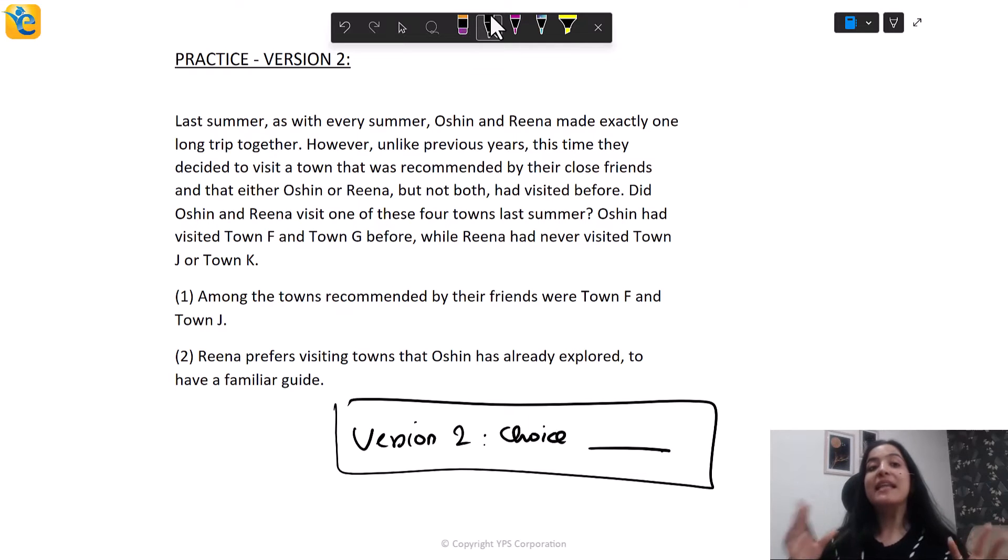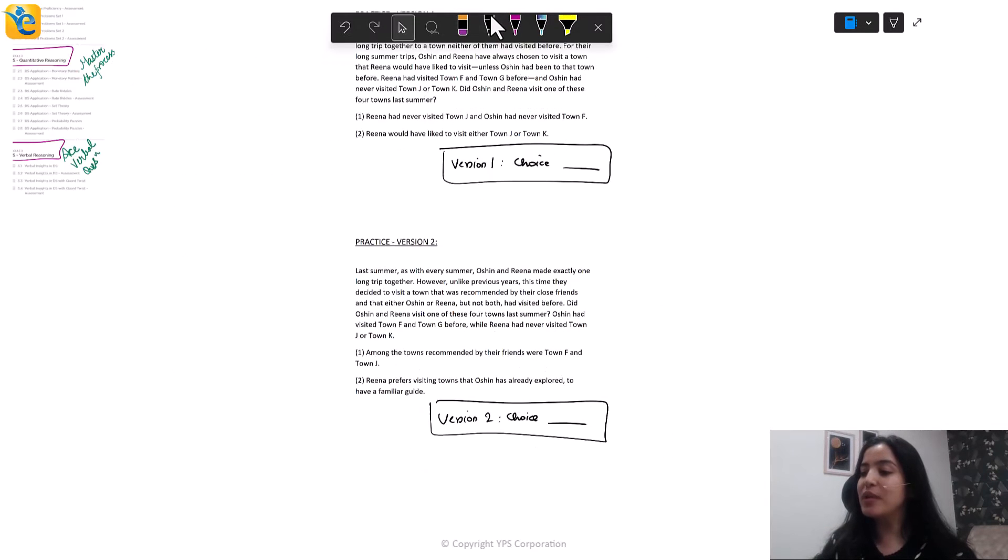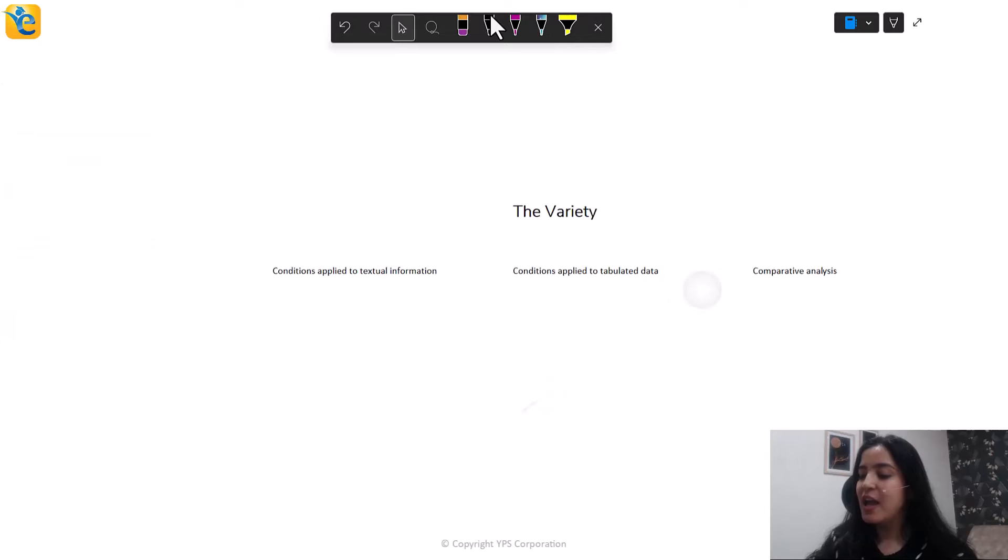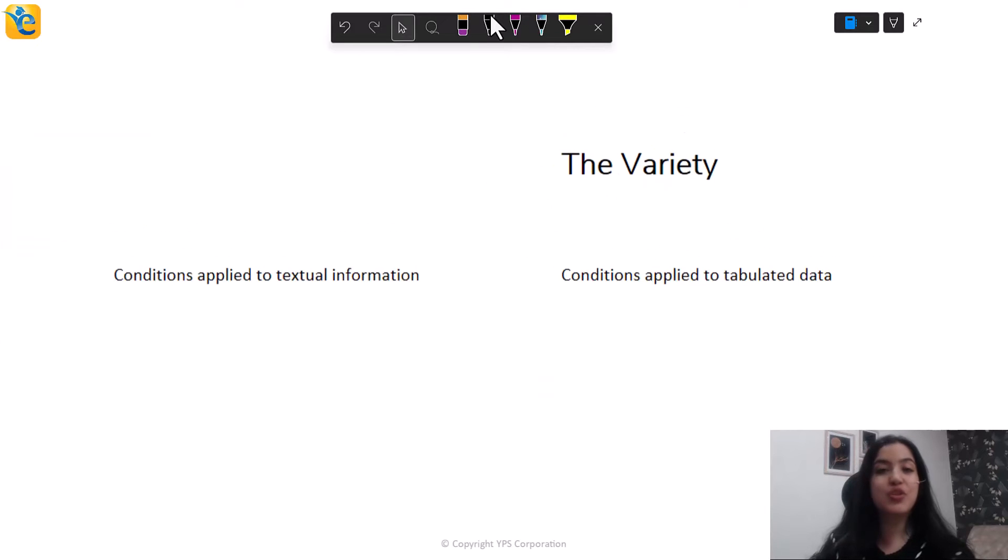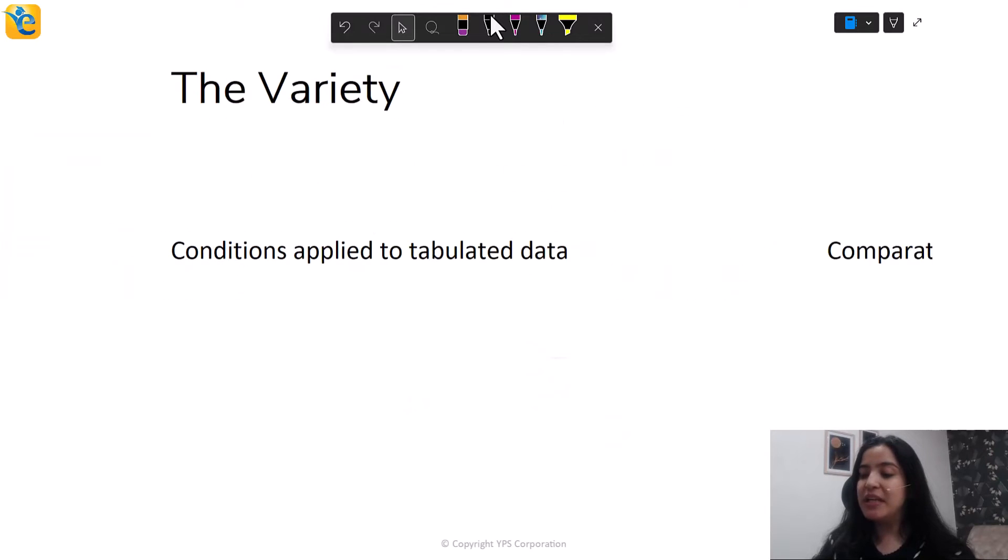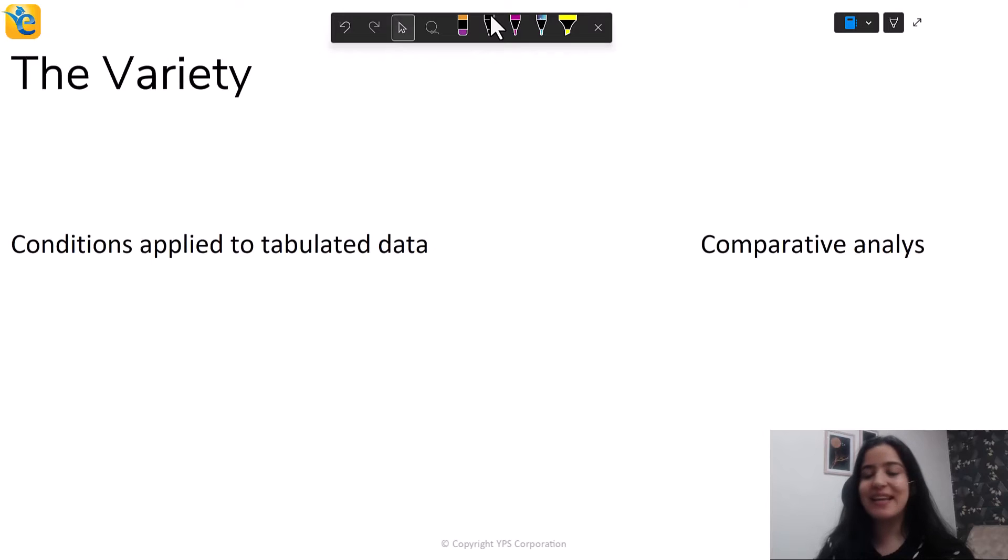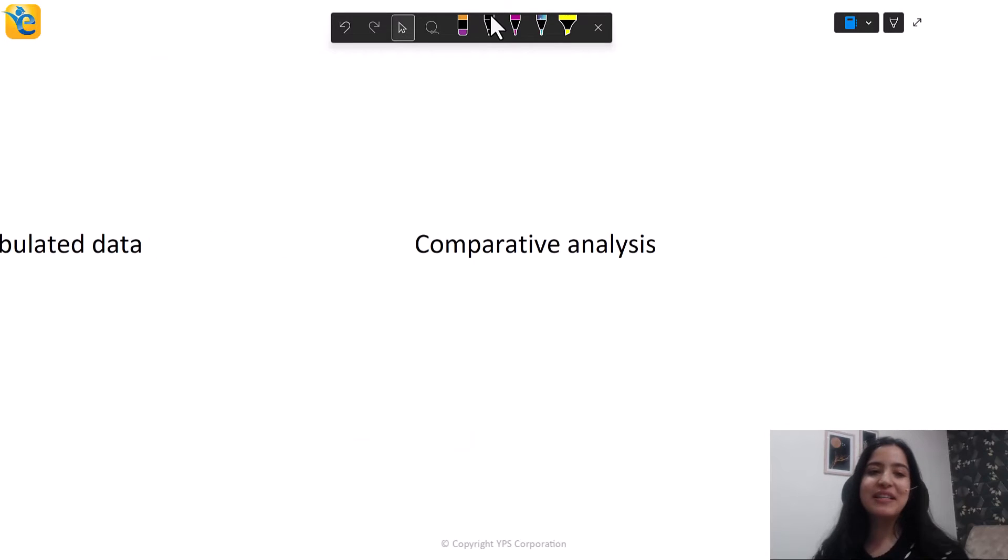Now, what's next for you in this series? Next, as I told you, we will go into the other two varieties. I showed you only variety one this time. We saw conditions applied to textual information. Now there will be conditions applied to tabulated data. And then finally, comparative analysis. Stay tuned for all of this. I'm sure you had fun today. Happy learning.